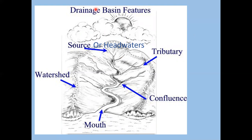Here's a diagram titled 'drainage basin' with a line separating one watershed from another. The source where water starts is called the headwaters; where it outlets into another body of water is the mouth. Streams contributing water to the main channel are called tributaries, and where a tributary intersects another tributary or the main stream, that's called the confluence. The dashed line in the diagram is the drainage divide.